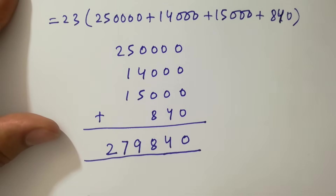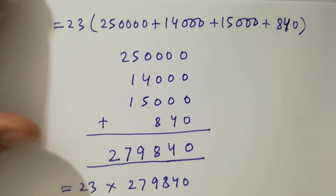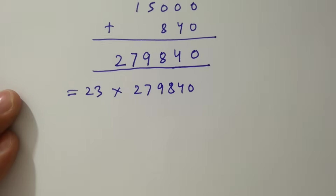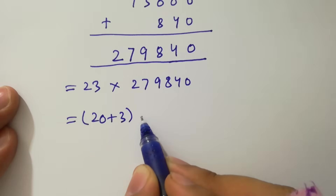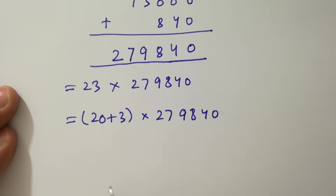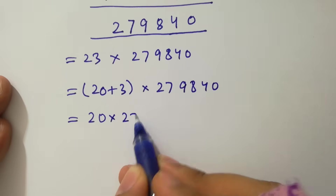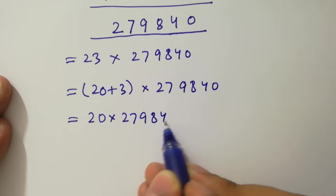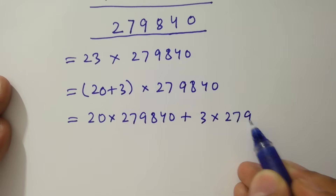So we have 23 times 279,840, which is the same as (20 plus 3) times 279,840, giving 20 times 279,840 plus 3 times 279,840.